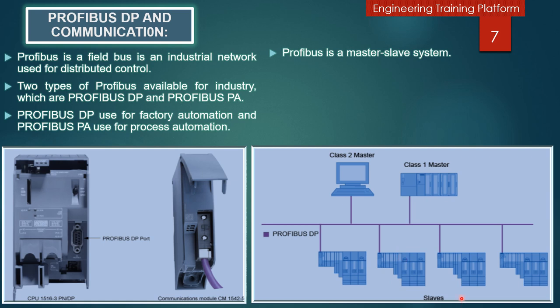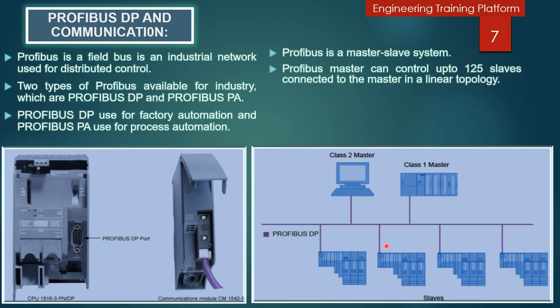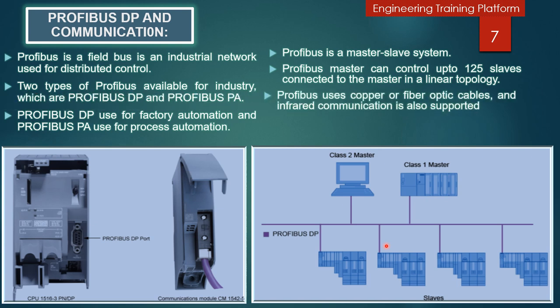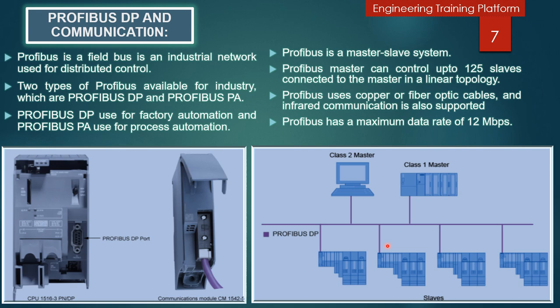The class 1 master communicates with the slaves, and the slaves communicate only when the master requires them to act. A PROFIBUS master can control up to 125 slaves connected in a linear topology. PROFIBUS uses copper or fiber optic cables, but infrared communication is also supported. PROFIBUS has a maximum data rate of 12 Mbps. Most communication is handled by the class 1 master, while the class 2 master is used for configuration, maintenance, diagnostics, and communication with the class 1 master and its slaves.